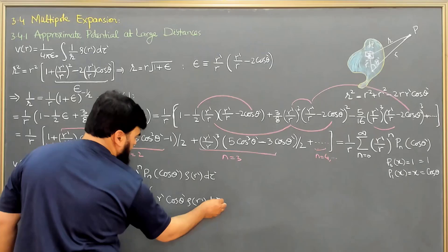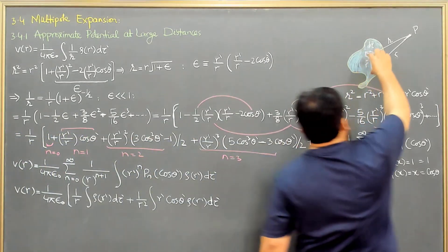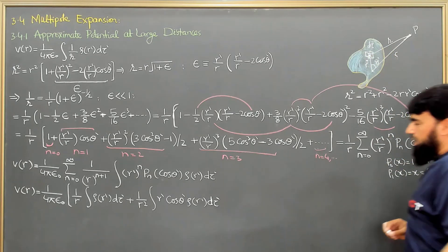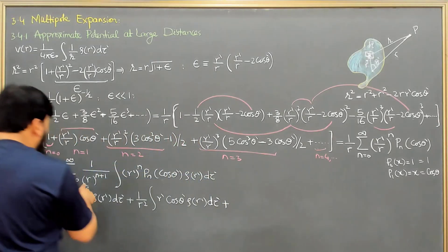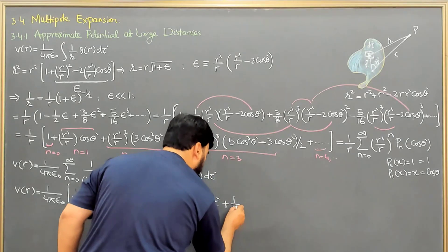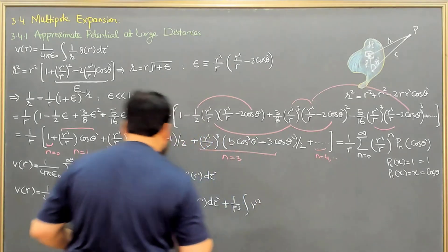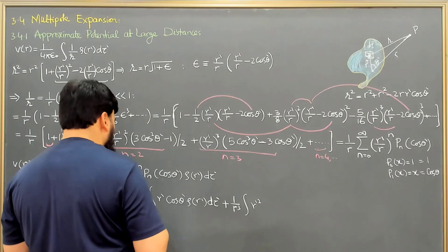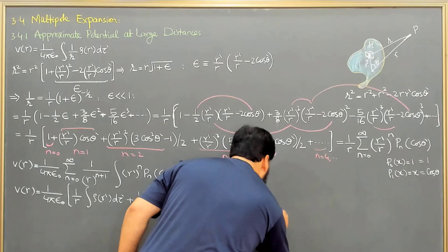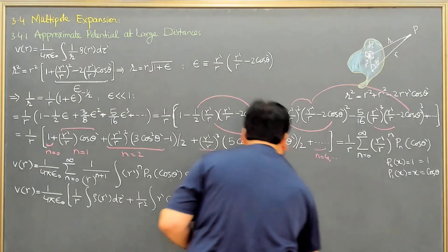The integration is over r prime, which is the fixed distance from the origin to the source point. When n equals 2, the term becomes 1 over r cubed, with r prime squared, and P_2 of cos theta prime. We know P_2 of cos theta prime equals (3/2) cos squared theta prime minus 1/2, times rho(r prime) d tau prime.